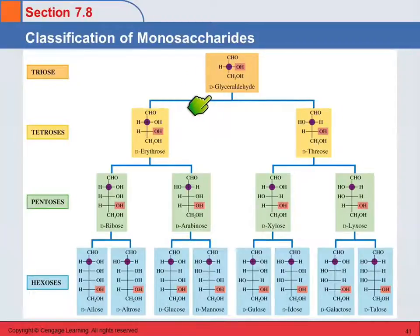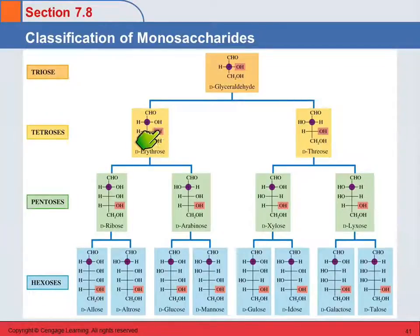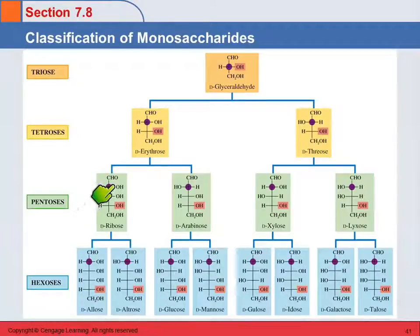Glyceraldehyde has a D and an L because it has one chiral center. The next one has two chiral centers. Erythrose has the hydroxyl group on the first carbon center on the right, and threose has that on the left. The D version of erythrose has the hydroxyl group on the right, and the bottom chiral center on all of these is on the right — that's the D enantiomer. The D and L designation only applies to that bottom, highest-numbered chiral center; the rest has to do with the chirality at the others.